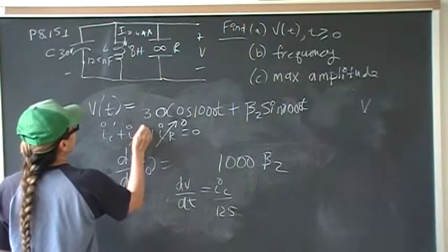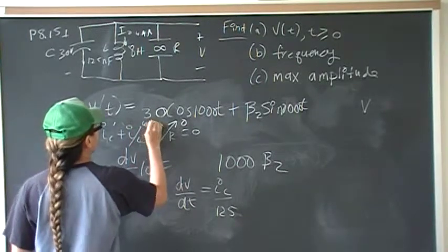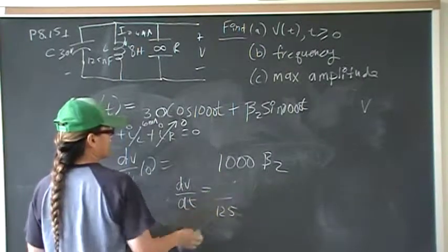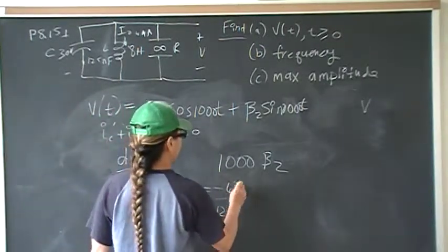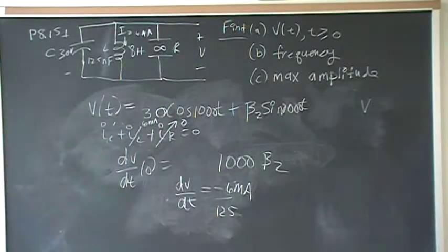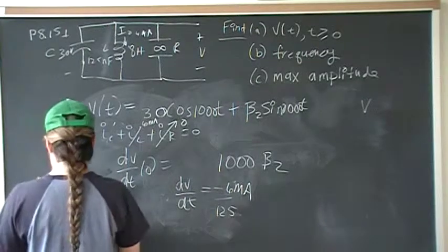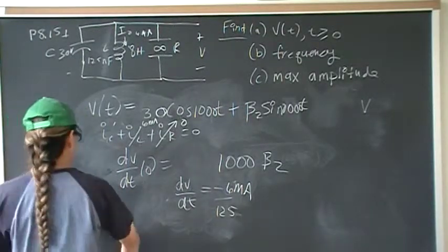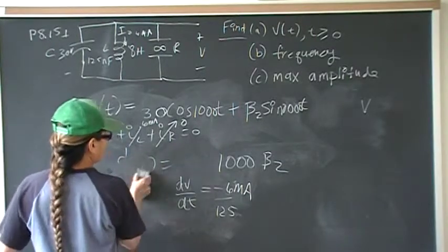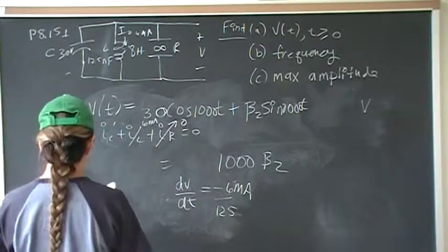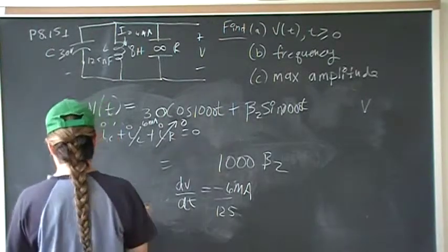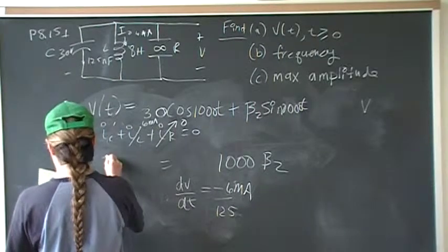And we know this is 6 milliamps. So therefore IC will be negative 6 milliamps. So this is negative 6.